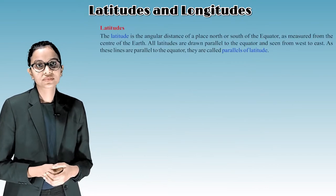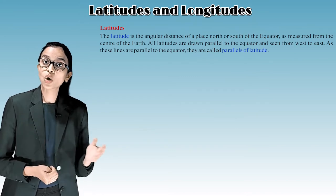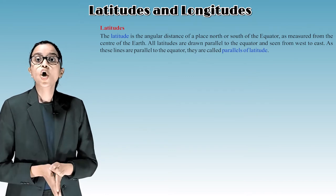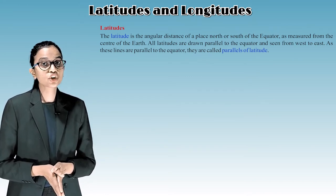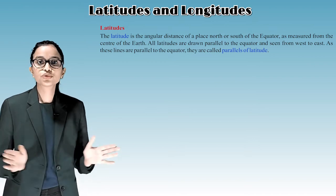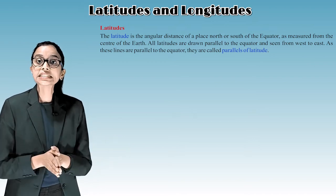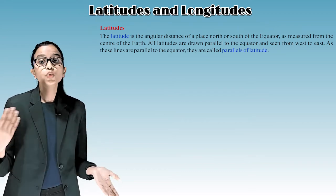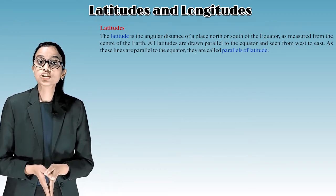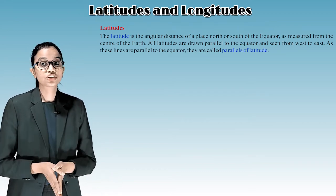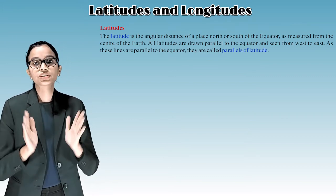Latitudes: The latitude is the angular distance of a place north or south of the equator as measured from the center of the earth. All latitudes are drawn parallel to the equator and seen from west to east. As these lines are parallel to the equator, they are called parallels of latitude.